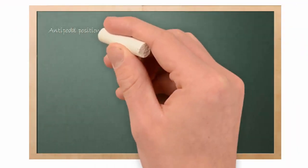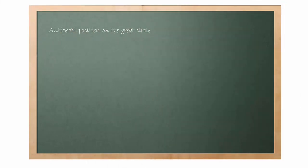The question we're asking about the position on the opposite side of the Earth. What does it really mean is the antipodal position on the great circle.